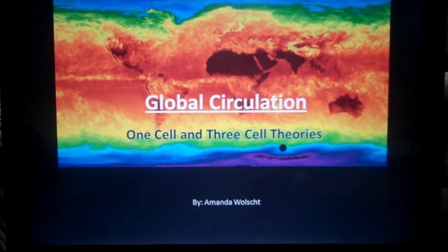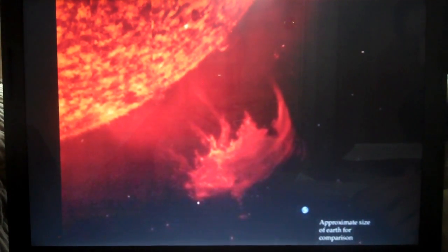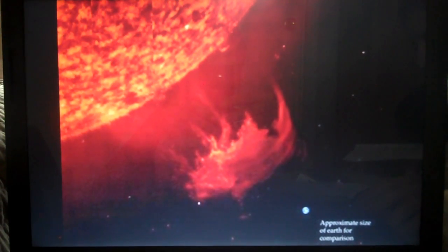Global Circulation in reference to one cell and three cell theories by Amanda Welsh. The Sun is so much larger than the Earth that all the energy we receive from the Sun comes from straight rays of radiated energy.